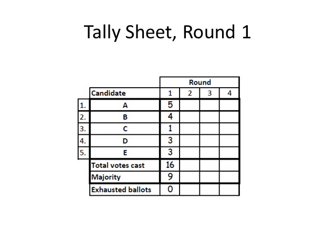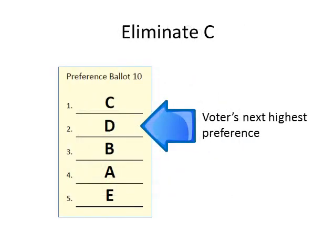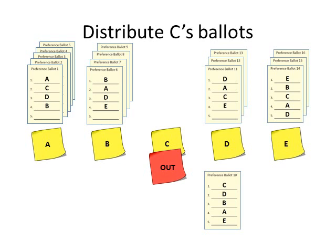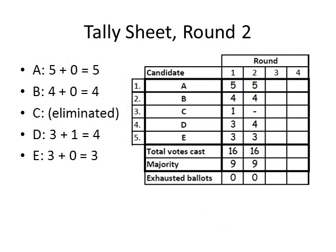Candidate C's ballot is distributed to the candidate who is the voter's next highest preference. Inspecting ballot 10, we see that the voter's next highest preference is candidate D, so ballot 10 is placed below the sticky note labeled D. The ballots below the sticky notes are counted and added to the number in the previous column of the tally sheet. Candidates A, B, and E did not get any additional votes, so their round 2 vote totals match their round 1 totals. D received one additional vote — 3 plus 1 is 4 — so his round 2 vote total is 4.